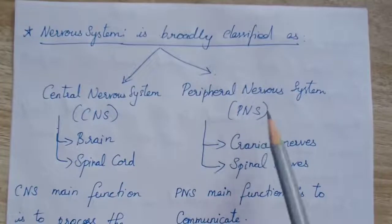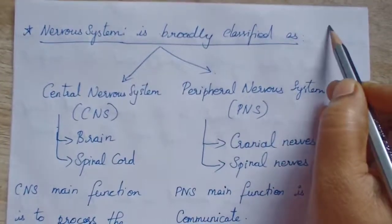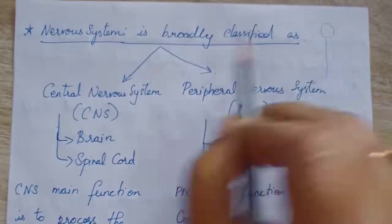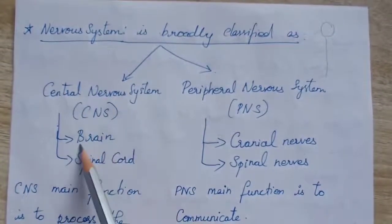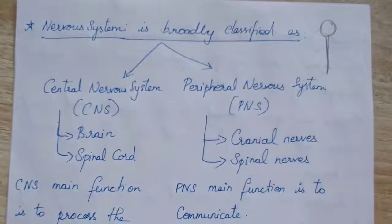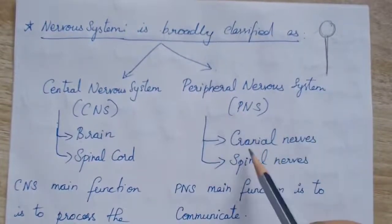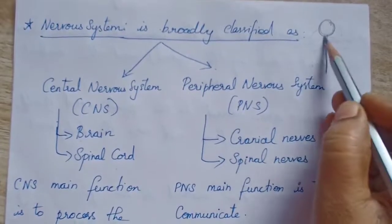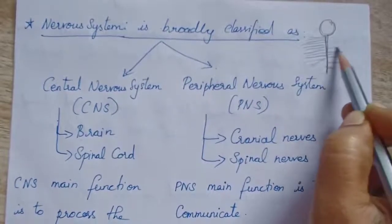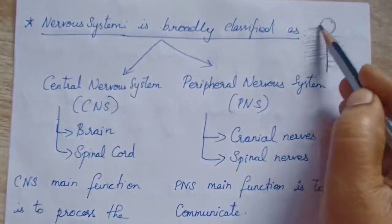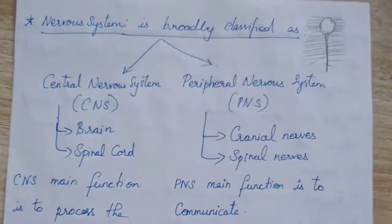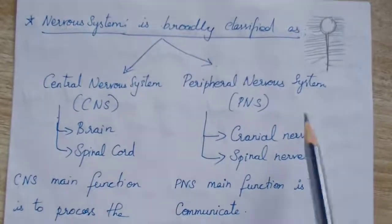The Central Nervous System consists of the brain and the spinal cord, arranged in a wire-like structure. The Peripheral Nervous System consists of cranial nerves and spinal nerves. The nerves coming out from the spinal cord are called spinal nerves, and those coming out from the brain near the skull are called cranial nerves.